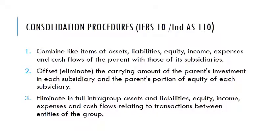The second step is to offset or eliminate the carrying amount of the parent's investment in each subsidiary and the parent's portion of equity of each subsidiary. So if you have a parent company and a subsidiary company, the parent will invest in 50% of the subsidiary.